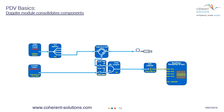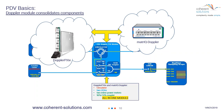I want to pause here and remind viewers that the components shown in the center are all contained in a single module from Coherent Solutions, available in a PXI form factor as well as a standalone benchtop unit known as the Matrix Doppler. This is one of the most condensed PDV solutions on the market.